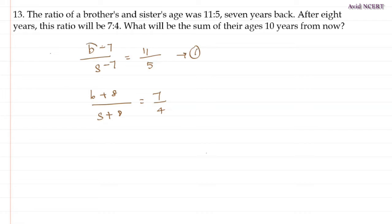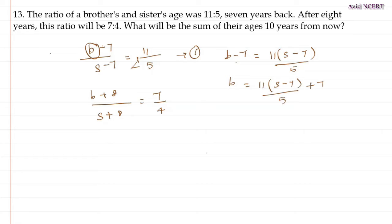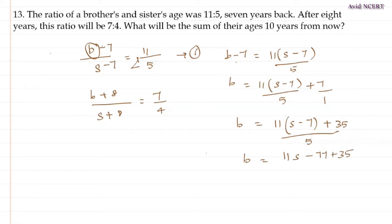With the first equation, let's find b. By cross multiplication: b minus 7 equals 11 times (s minus 7) divided by 5, and this minus 7 goes to the other side and becomes plus 7. So b equals (11 times (s minus 7) plus 35) by 5, which gives b equals (11s minus 77 plus 35) divided by 5. So b equals (11s minus 42) divided by 5.